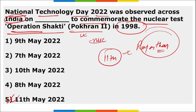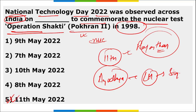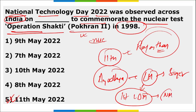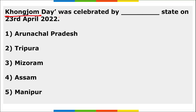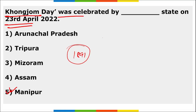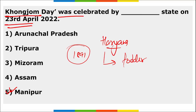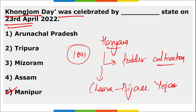A crossing in Ayodhya will be named after Lata Mangeshkar. The first edition of the Lata Dinanath Mangeshkar Award was presented to Narendra Modi. Kongjom Day was observed by Manipur on 23rd April 2022 to commemorate the sacrifice of Manipuri warriors against the British in the Battle of Kongjom in 1891. Haryana launched the 'Chara Vijai Yojana' scheme for fodder cultivation.